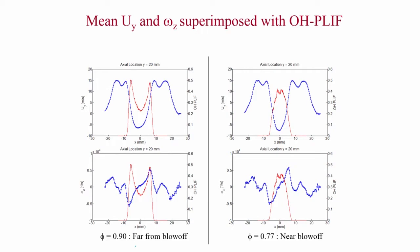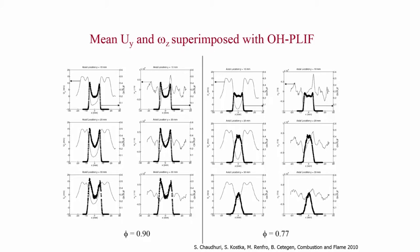As blow-off is approached, the bimodal spatial distribution of OH is lost and you get a single central distribution — statistically you can no longer find maximum OH along the shear layers; instead, maximum OH is found inside the recirculation zone. The vorticity structure has not changed much on average, but the OH structure has changed and there is no OH along the shear layers. This is consistent across all axial locations: bimodal distribution at equivalence ratio 0.9, unimodal at 0.77 near blow-off.